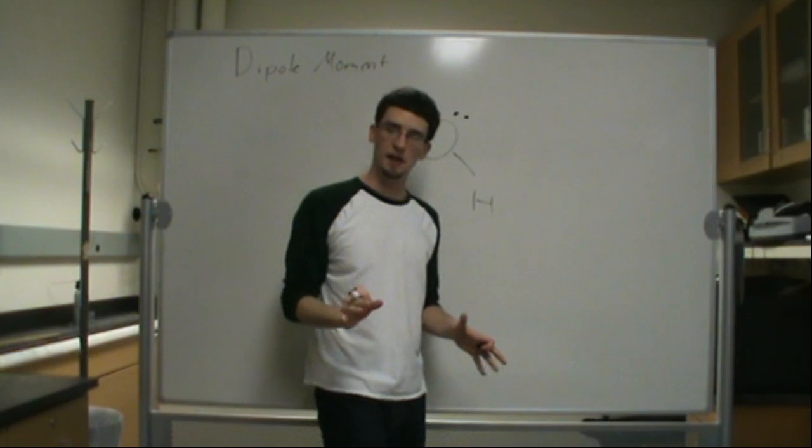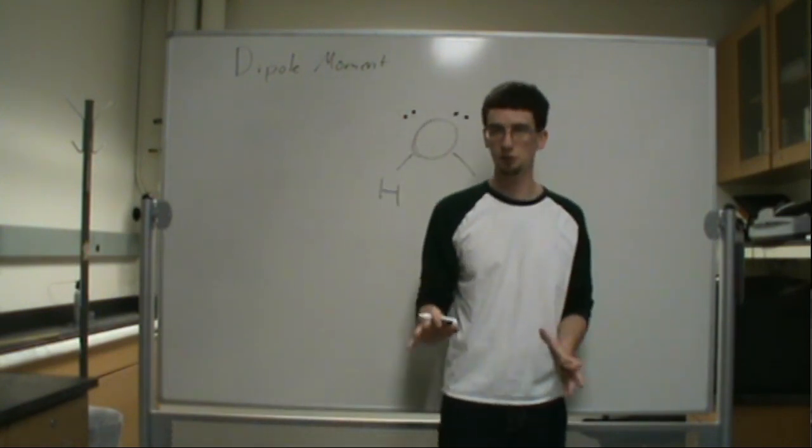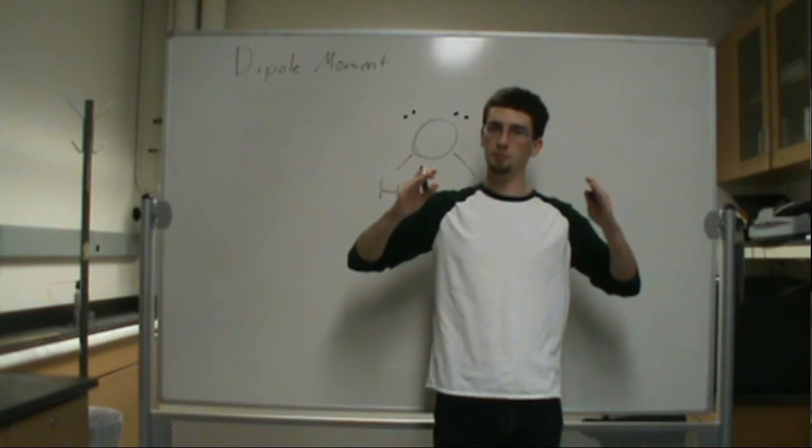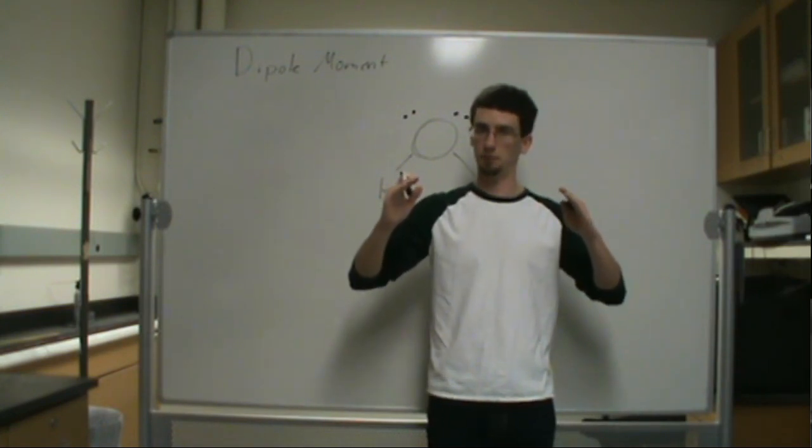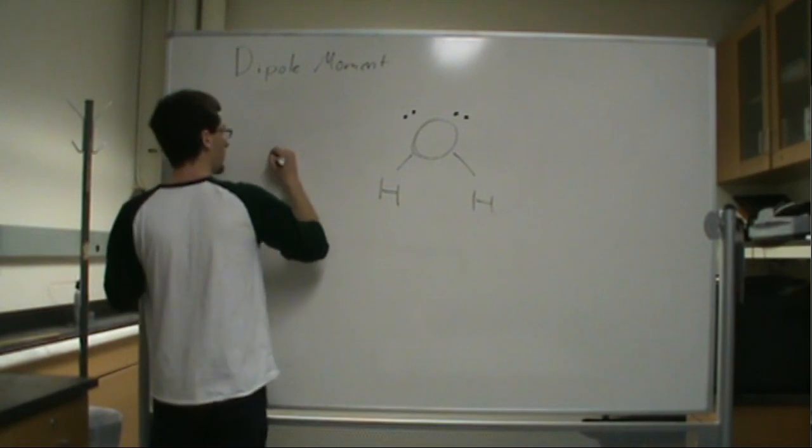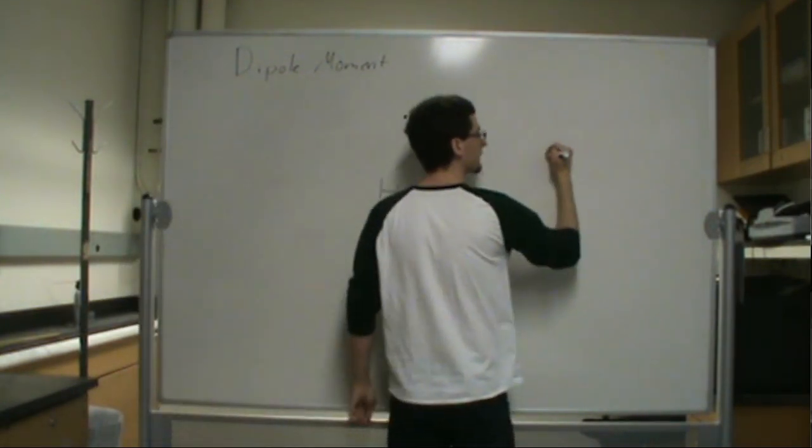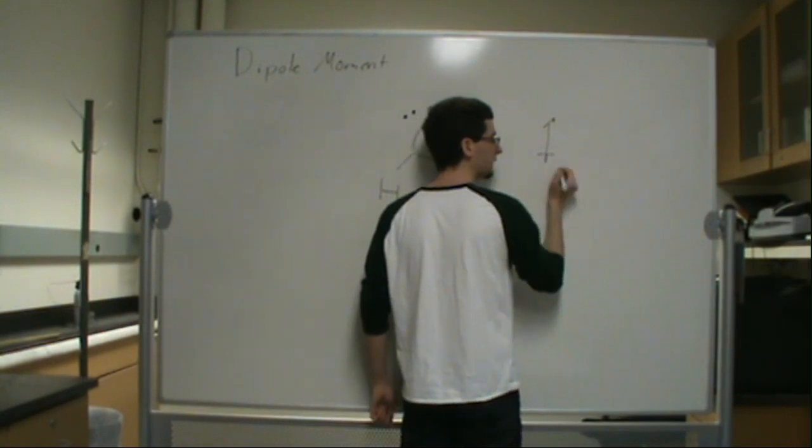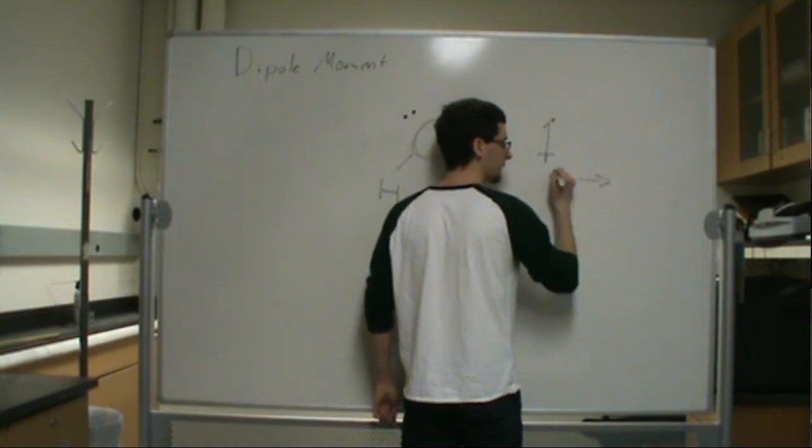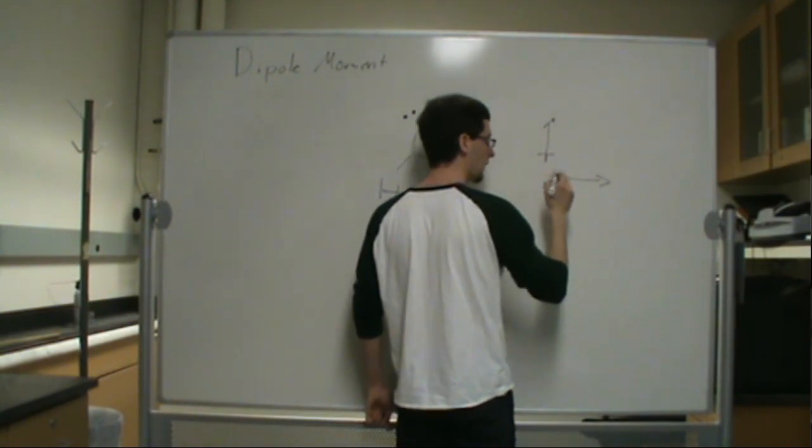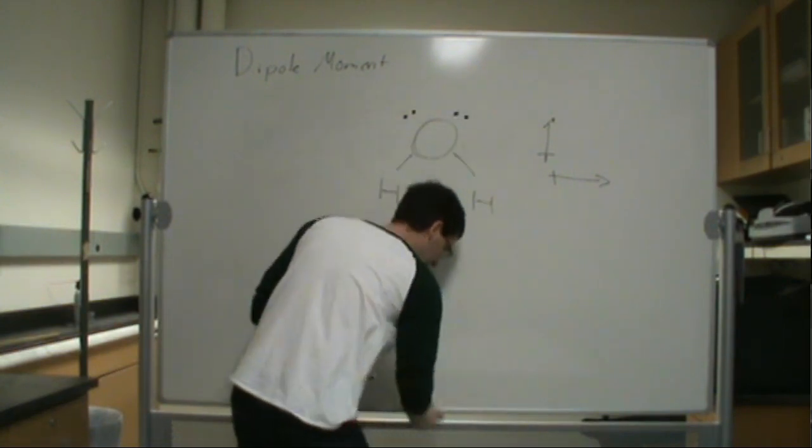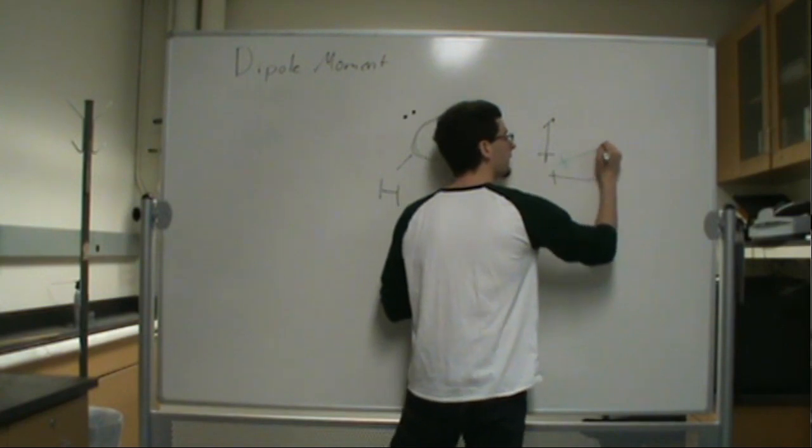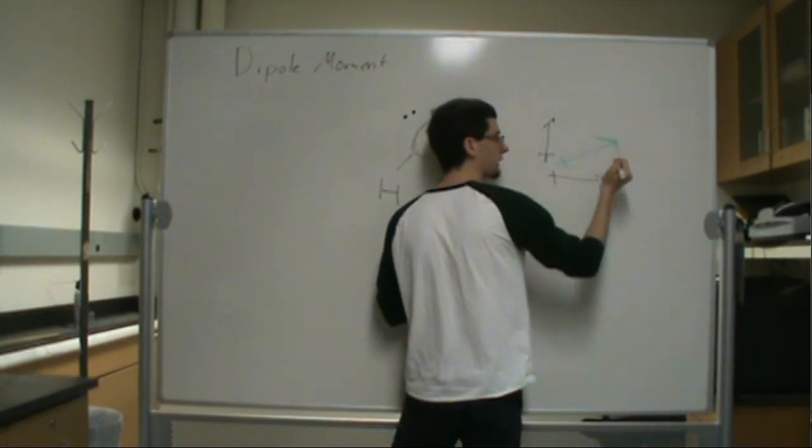Now, what I like to do is, I like to draw a dipole moment for each bond. And then, since they're vector quantities, they add up together, so their components add up. So, what I mean by that is, if I have a dipole that's pointing like that, and one that's pointing like that, the overall dipole moment, which I'm going to draw in green, is going to point like that.